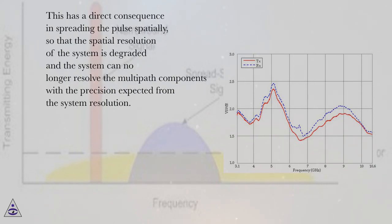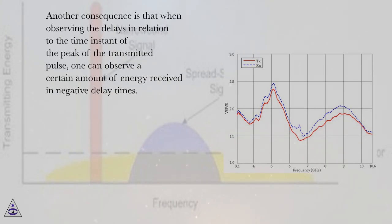This has a direct consequence in spreading the pulse spatially, so that the spatial resolution of the system is degraded and the system can no longer resolve the multipath components with the precision expected from the system resolution. Another consequence is that when observing the delays in relation to the time instant of the peak of the transmitted pulse, one can observe a certain amount of energy received in negative delay times.